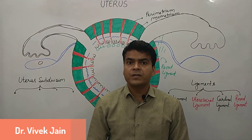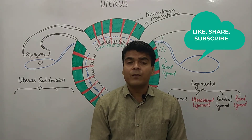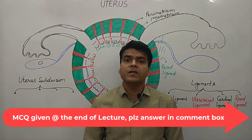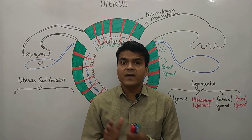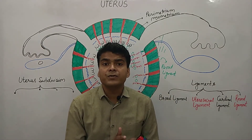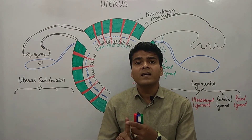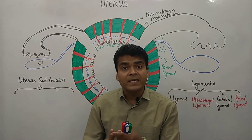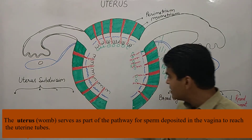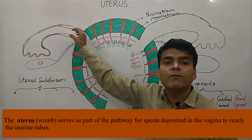Hello everyone, welcome to the channel Tutor Box. In today's class we are going to discuss about the uterus. In an earlier class we already discussed about the uterine tube or fallopian tube. The first function of the uterus is that it provides transportation space for the sperm to reach the fallopian tube, so the sperm can move to the fallopian tube and fertilize the ovum.